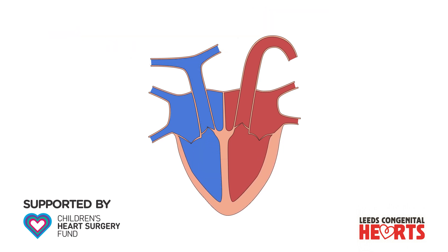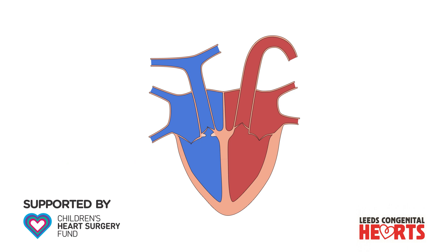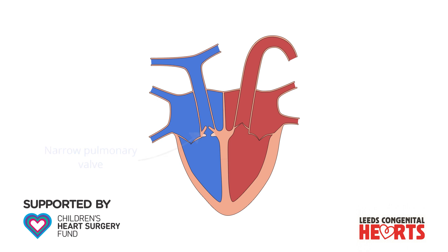The obstruction to blood being pumped to the lungs can occur at different levels. There may be a narrowing within the right ventricle just below the pulmonary valve due to an excess or overgrowth of heart muscle. There may also be an obstruction at the pulmonary valve itself — it may be too small or formed in such a way that it doesn't open very well. The obstruction can also be within the pulmonary artery or its branches, which may be narrow.